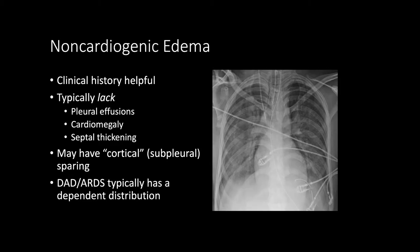There are other entities that can simulate pulmonary edema. Non-cardiogenic edema — more commonly termed acute lung injury or diffuse alveolar damage — can cause pure edema from non-cardiogenic causes. These patients tend not to have pleural effusions; they tend to have normal heart size and often do not have septal thickening or Kerley B lines, although those may be present. In some cases you'll see sparing of the immediate subpleural lung.